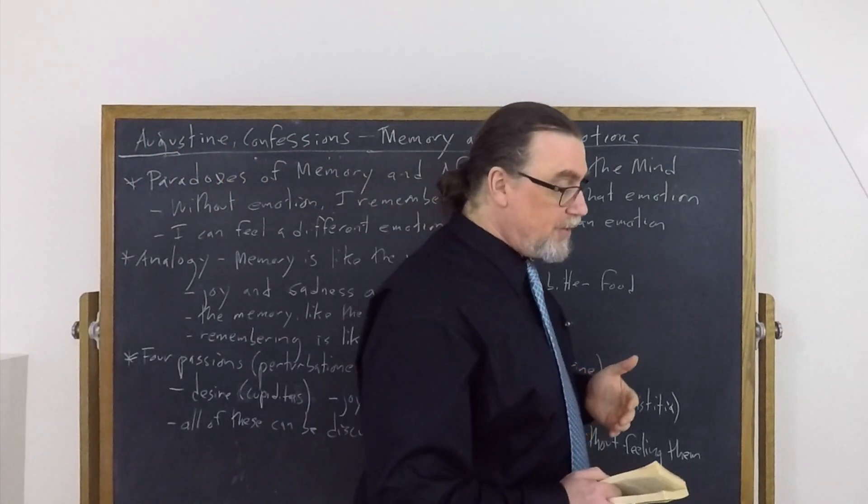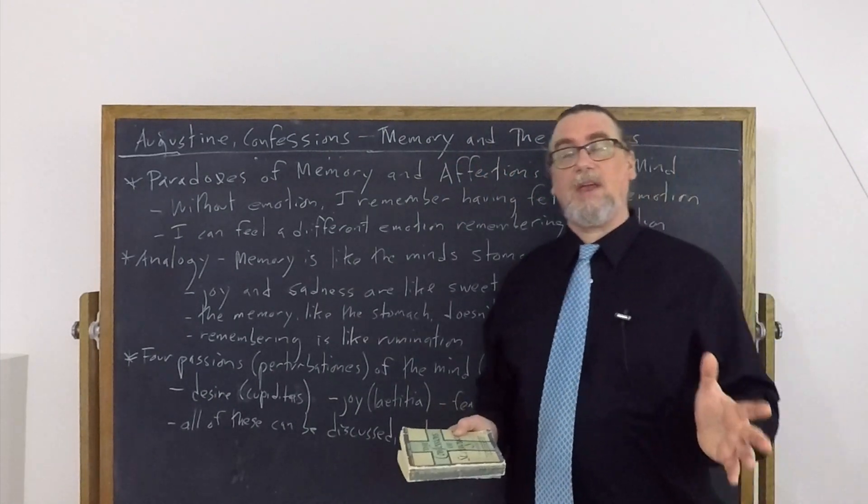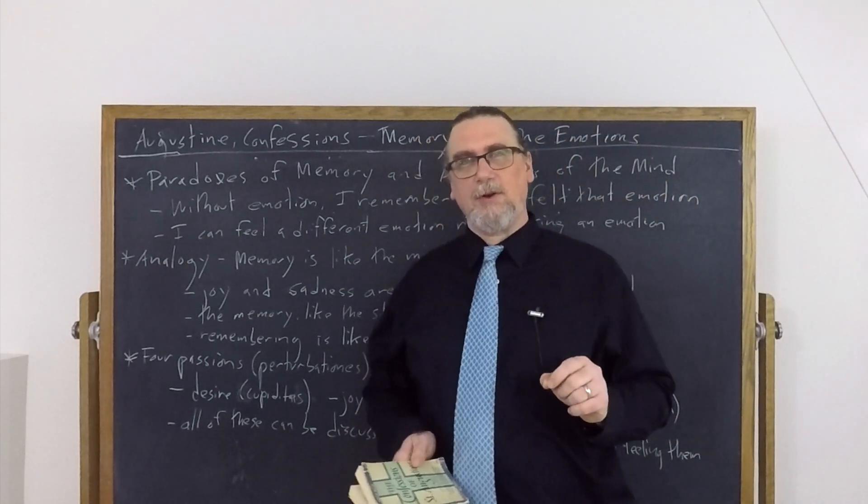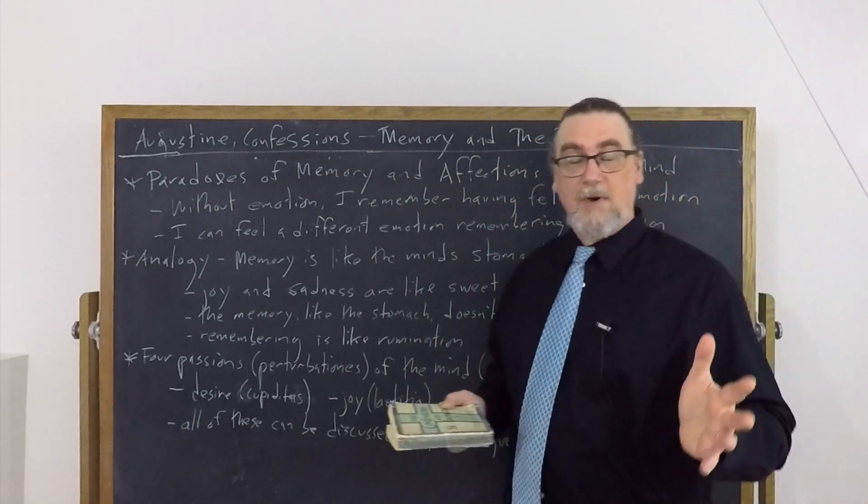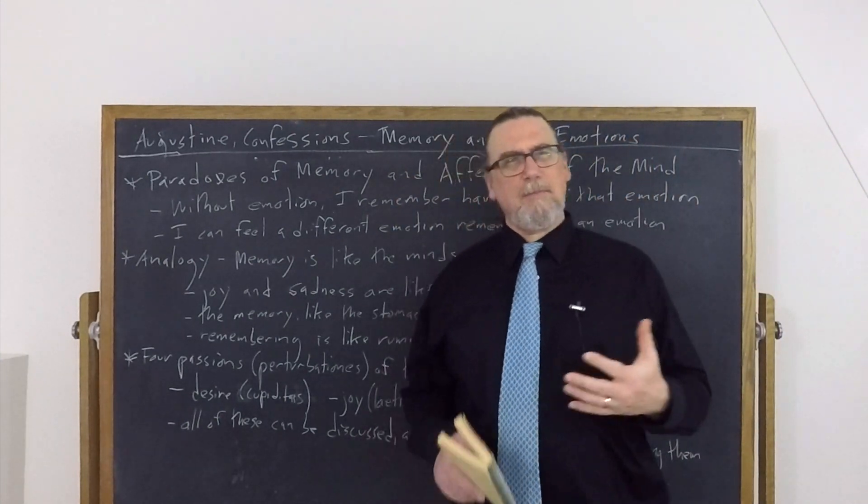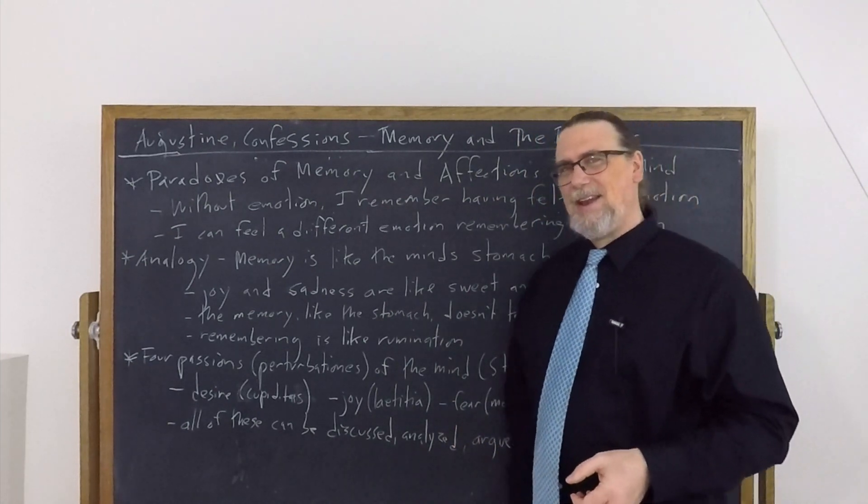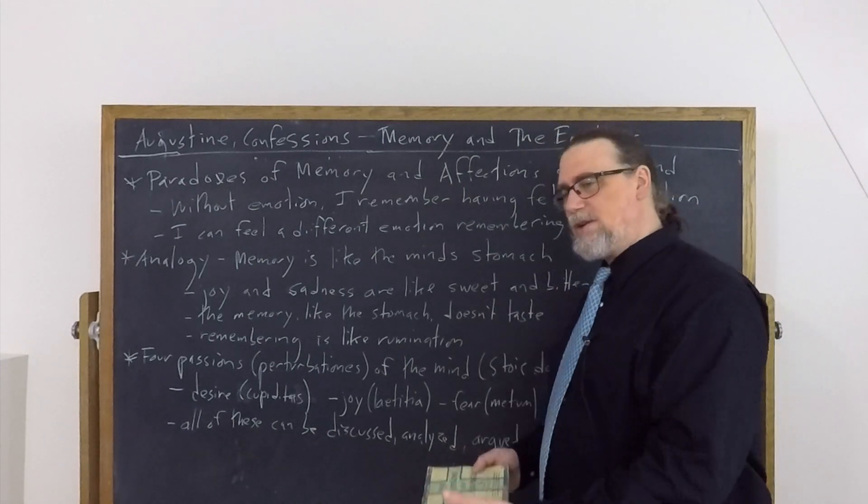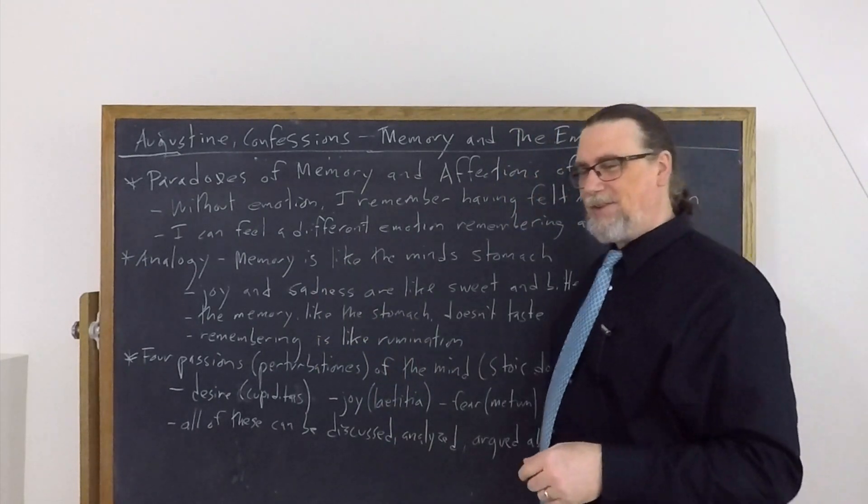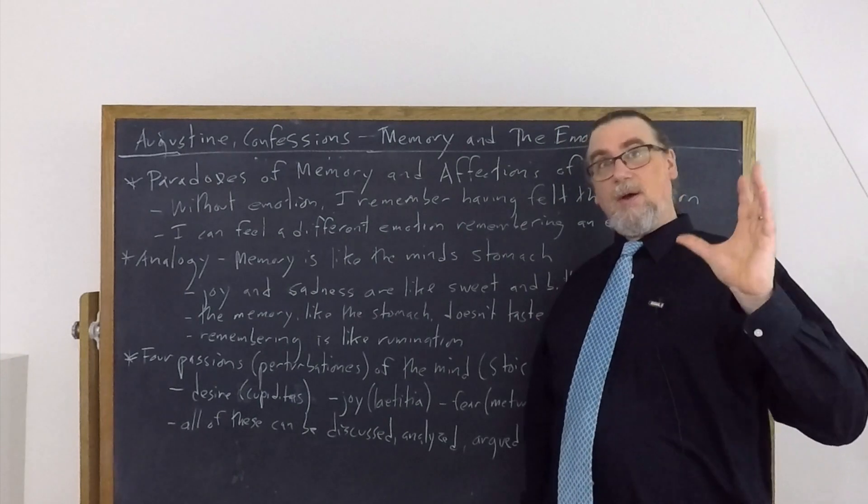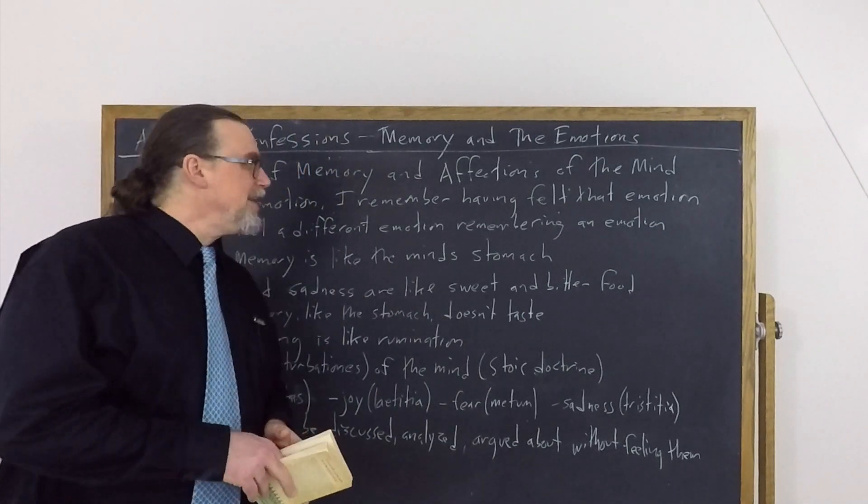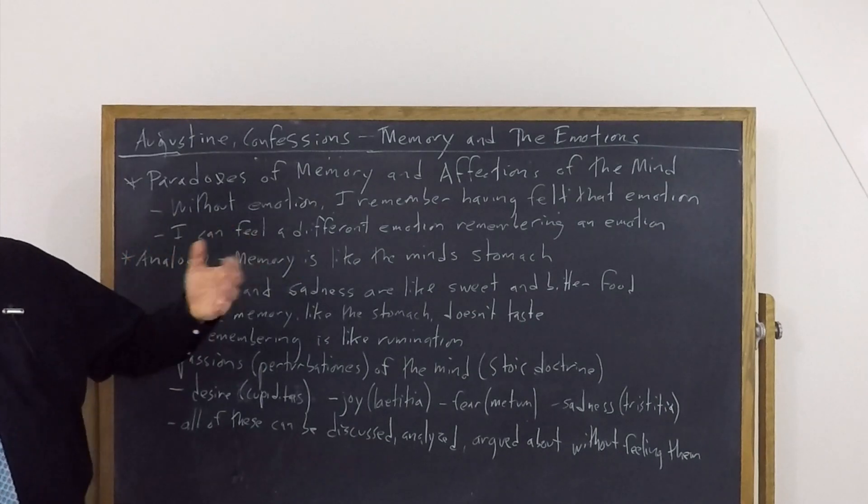In Book 10 of his Confessions, St. Augustine discusses at significant length the power of memory. And one of the things that he focuses on in one particular chapter is the emotions, or as we can call them following his own verbiage, the affections of the human mind. And there's some paradoxical things that he notes when it comes to these. A lot of times when we dredge something out of memory, we're bringing that thing before our mental eyes or in our mind, and we're having it there to scrutinize. When it comes to our emotions, it doesn't seem that that's actually the case.